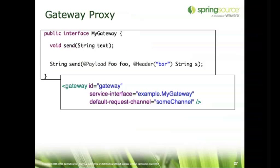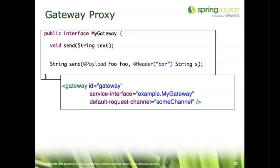The problem with interacting directly with the channel or with the messaging template is that you're then aware of the messaging API. That might be okay if you're building framework code, but when you're building an application that needs to invoke something that fires a message, you don't want to have a dependency on the API at all. In the Enterprise Integration Patterns book by Gregor Hohpe and Bobby Woolf — which has provided the standard language to describe these types of patterns — they talk about a messaging gateway as a way to abstract yourself away from the messaging API so that your code is not directly aware of that messaging layer.